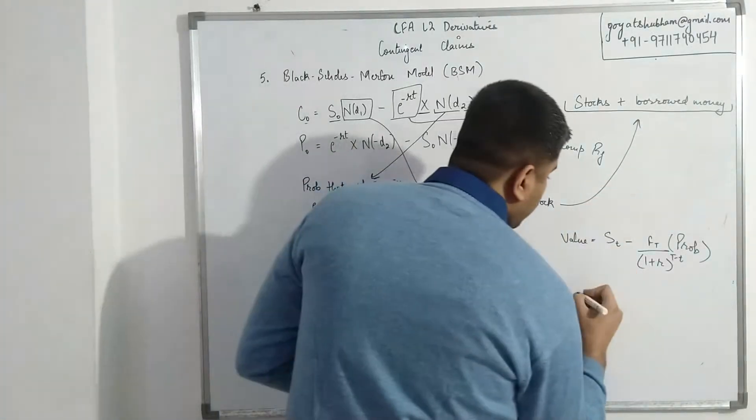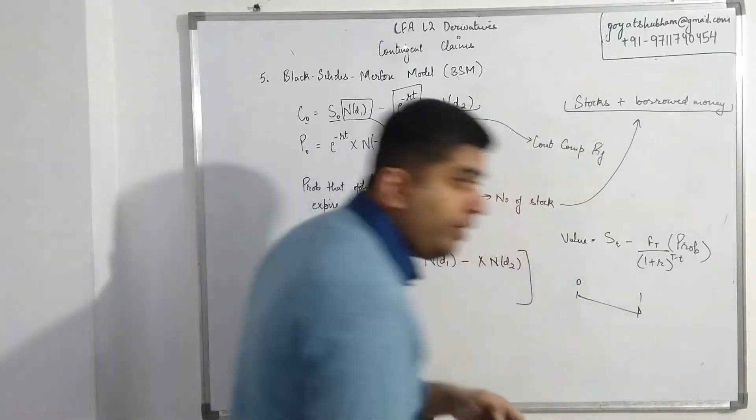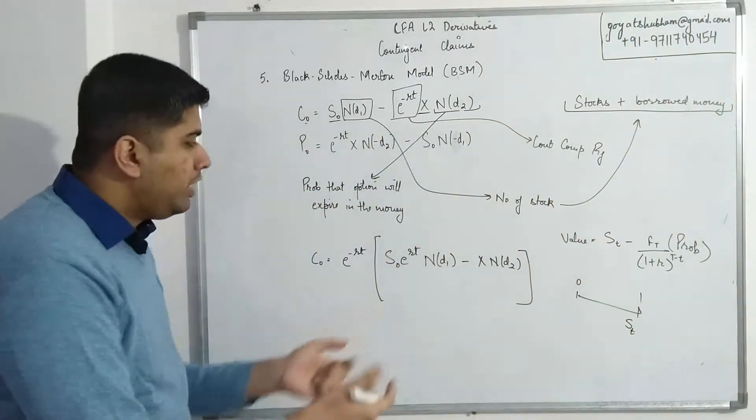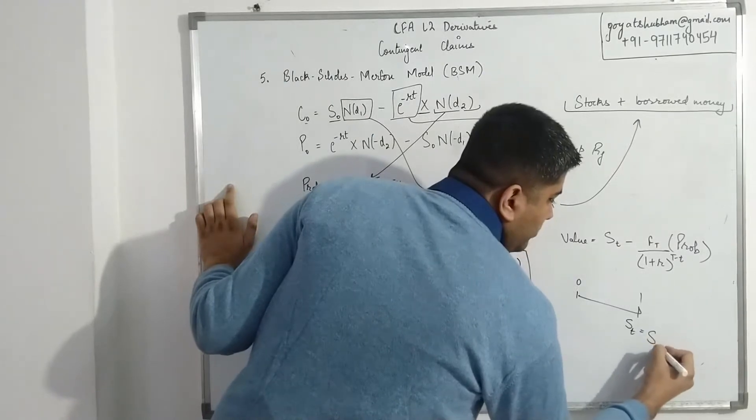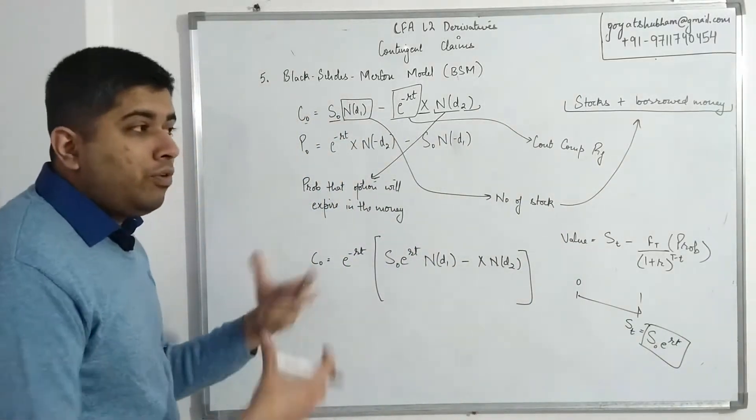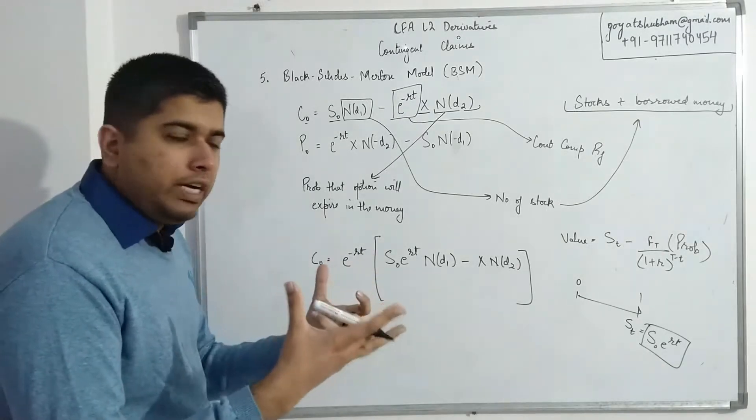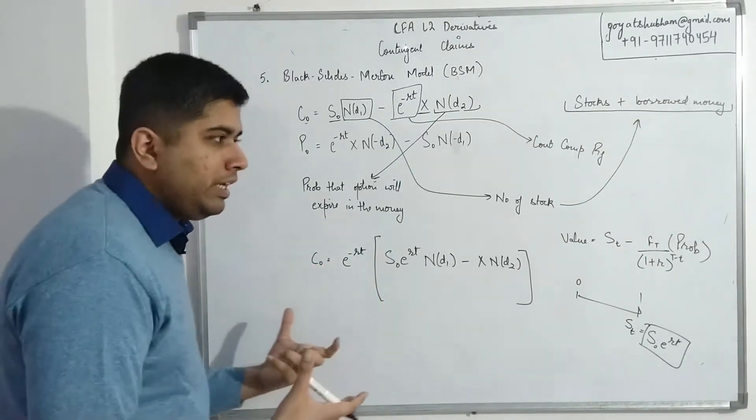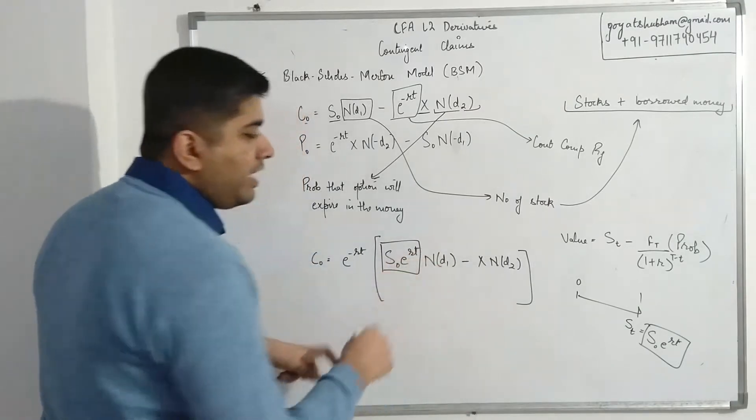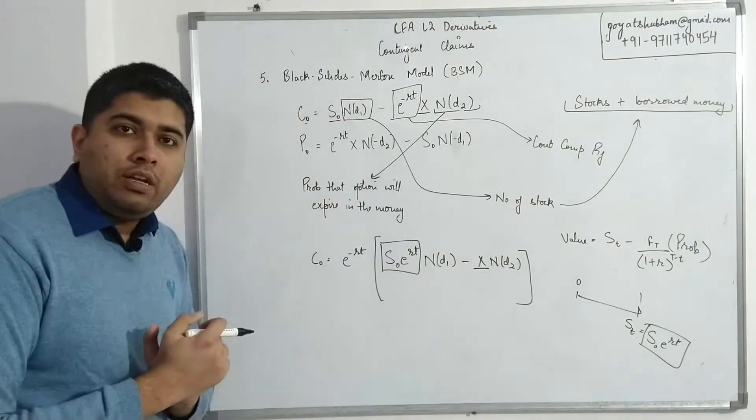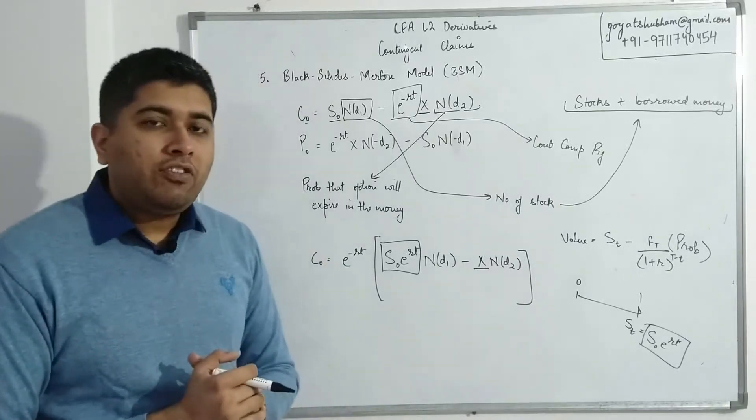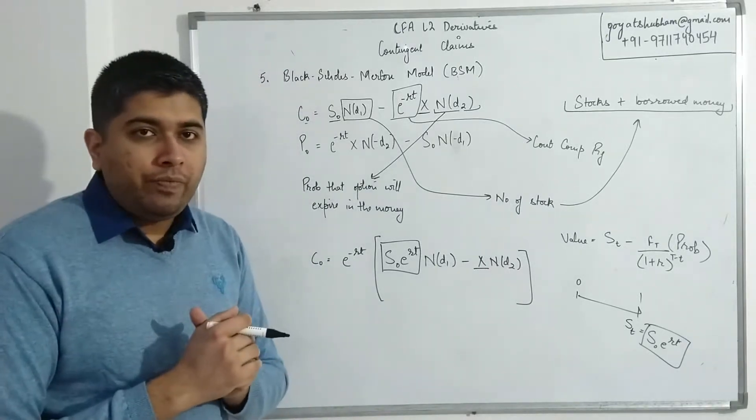This might be slightly easier to understand if the first one was confusing. What I am saying here is the payoff that I will have from a call option in the future—so at any point in time, let's say today is time zero, after one year the payoff that I will have—will be the spot price at time T, whatever the spot price is at that moment. Spot price at time T is simply spot price at time zero * e^(rt). If you remember in case of forwards or futures, the forward price was calculated in the same way. Forward price was nothing but spot price taken up by way of compounding.